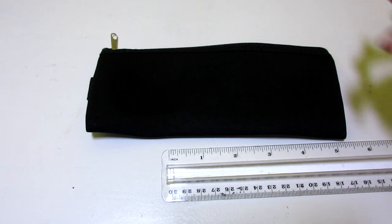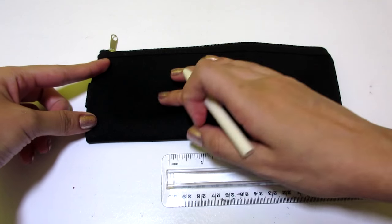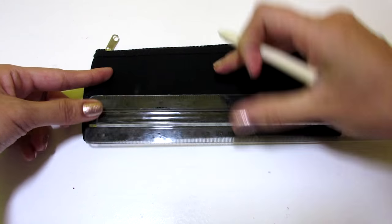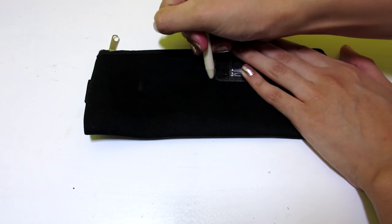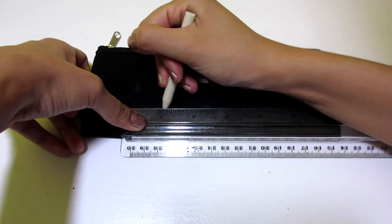First, grab your pencil pouch, your ruler, and a pencil. What you want to do first is draw two equal rectangles for the eyes. I made each eye two by one inch, and I also left about half an inch gap in between each eye.